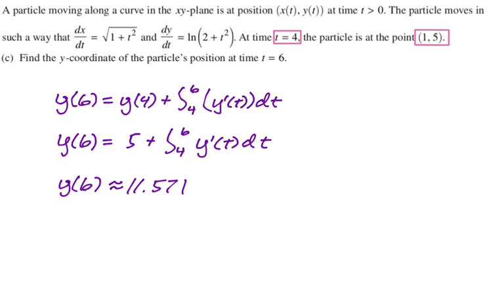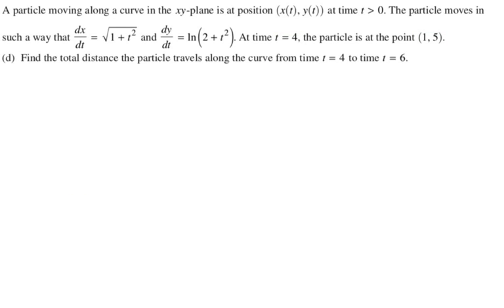And finally, find the total distance the particle travels along the curve from time t equals 4 to t equals 6. All right, so distance traveled is the integral of velocity, velocity—sorry, no, it is not. Distance traveled is the integral of speed.